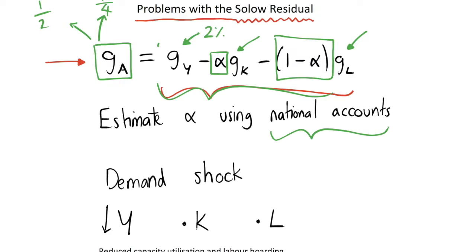So we can estimate alpha using our national account data, and we can decompose our output into these growth rates. There may be a bit of measurement error. The national accounts aren't perfect, they maybe use survey data because we can't know every piece of equipment that's owned in every factory for example.